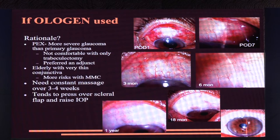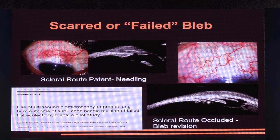In cases such as pseudo-exfoliation with more severe glaucoma and an elderly patient with thin conjunctiva, an ologen may be used. However, it needs constant massage over three to four weeks and tends to press over the scleral flap and raise pressure. Post-op management of an ologen bleb is a little different from the usual post-op course.